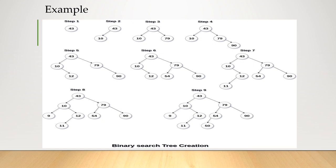Here the creation of binary search tree is completed. 43 is the root node, and all the keys in the left subtree are smaller than 43, and all the keys in the right subtree are greater than the root node. So this is called a binary search tree.